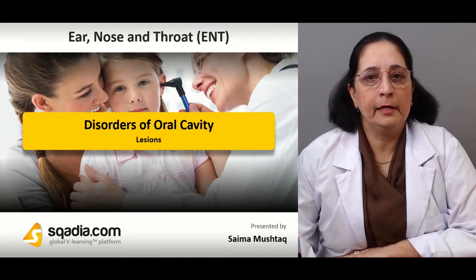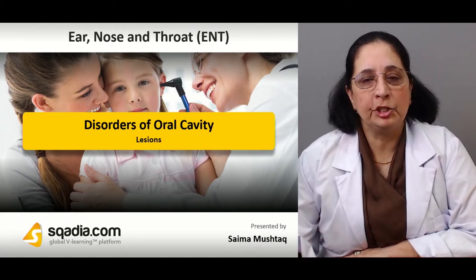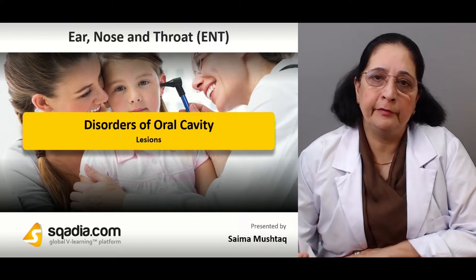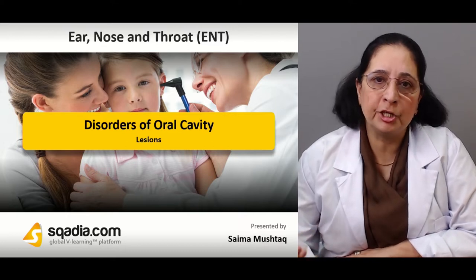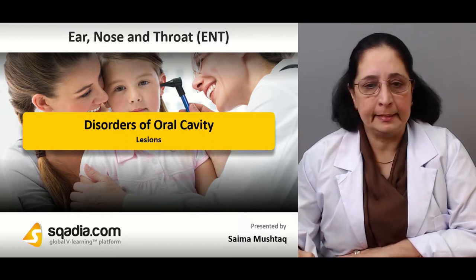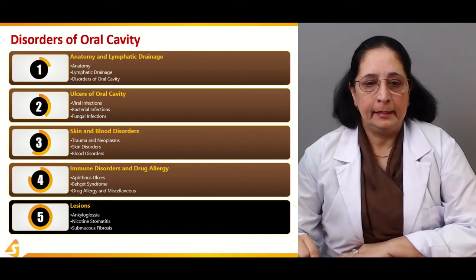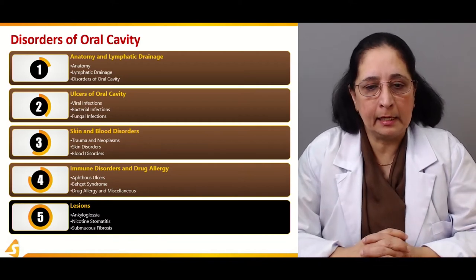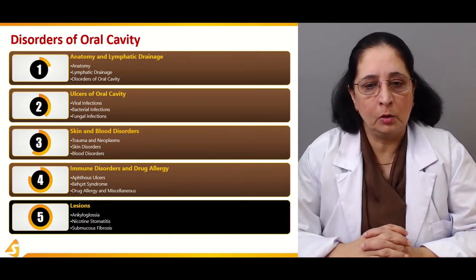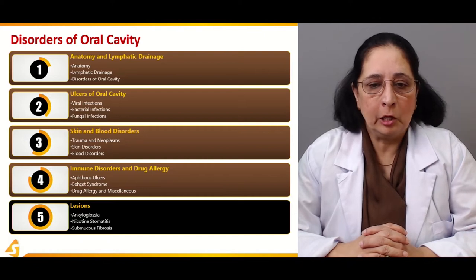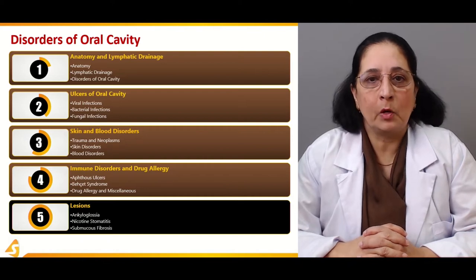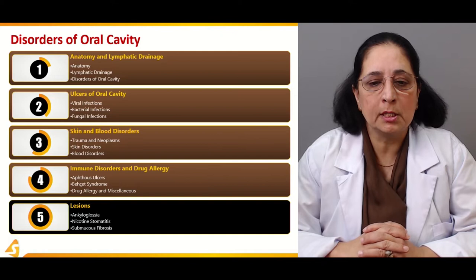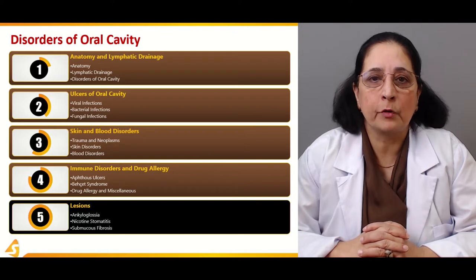Let's begin with the fifth and final section of our lecture in which we will talk about different lesions of the oral cavity. The lesions which we will discuss will be ankyloglossia, nicotine stomatitis, and also submucous fibrosis.